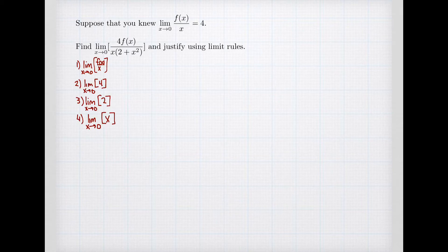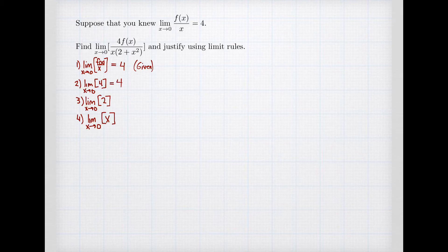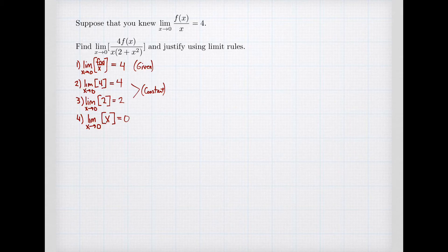These are our four elementary starting points. We know the limit of f(x)/x as x goes to 0 is 4, because that was given to us. Constants don't change, so the limit of 4 as x goes to 0 is 4, and the limit of 2 as x goes to 0 is 2 — these are constant functions. Finally, the limit of x as x goes to 0 is 0; this is the limit of the identity function.